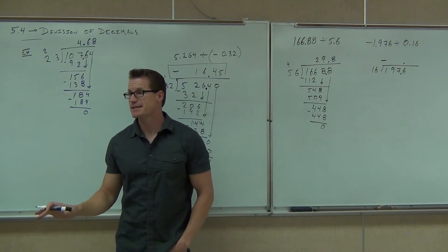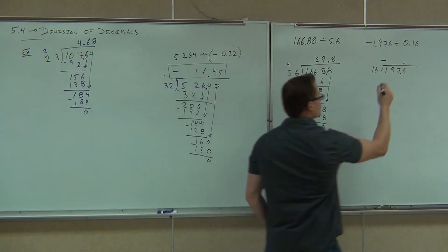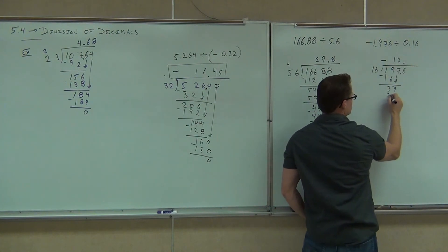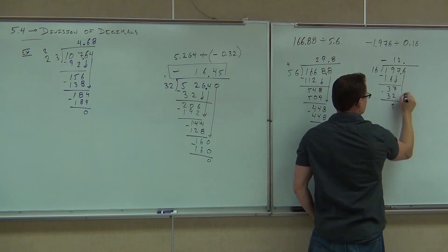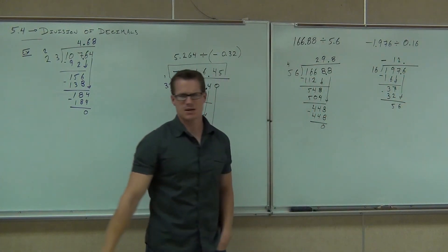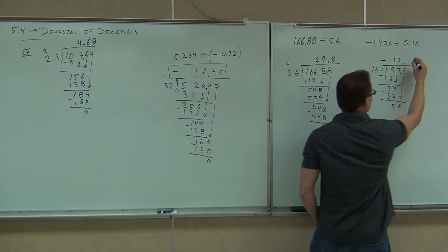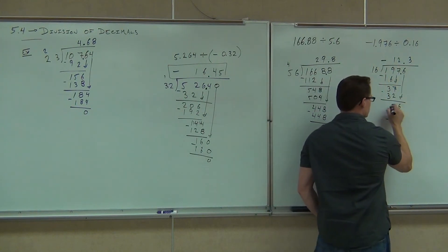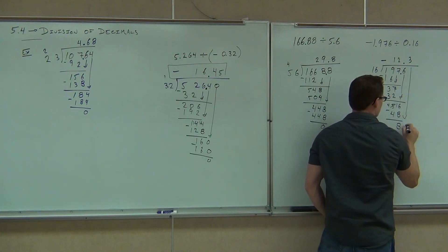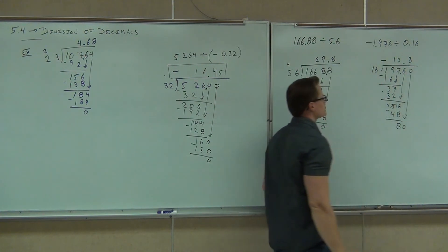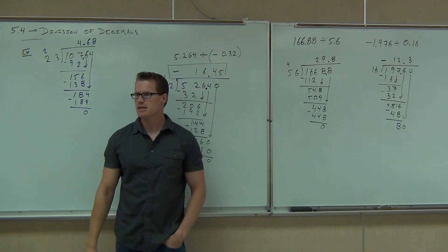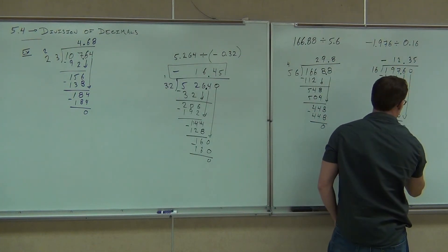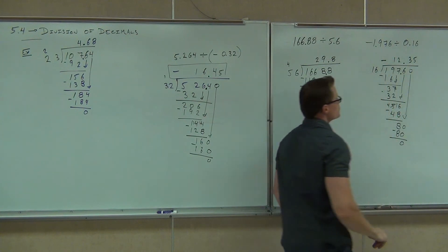16 goes into 1? No, it doesn't. 16 goes into 19 — yes, one time. So 16, we'll subtract, we'll get 3. Bring down our 7 — I'm guessing that goes in twice because that's 32. If I subtract and bring down my 6, I have 56 — 16 into 56 is three times, that's 48. It looks like we're going to have a remainder. So I'm going to bring down a 0 here. 16 into 80? Five times. So negative 12.35.